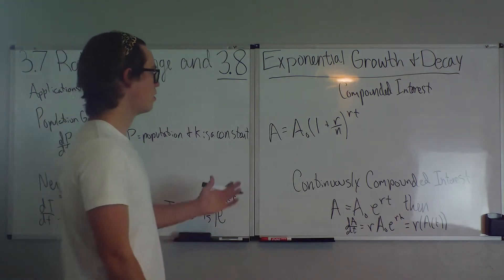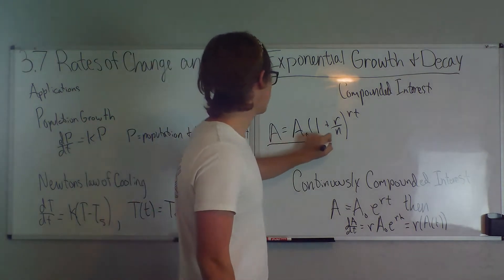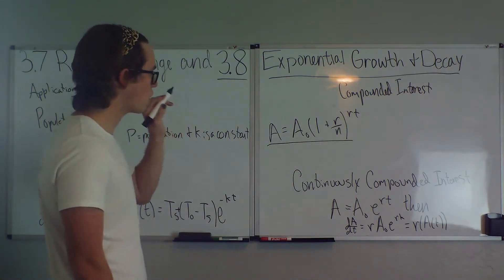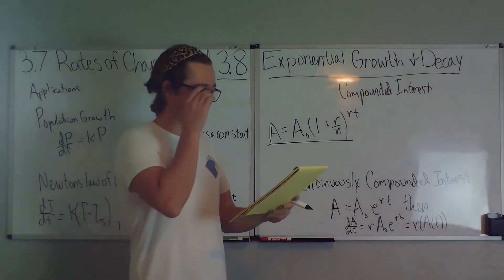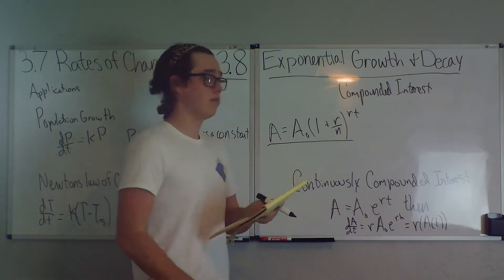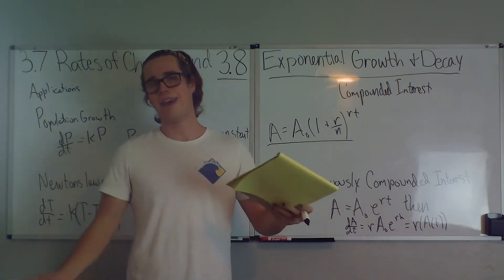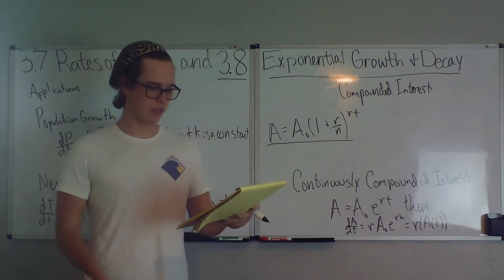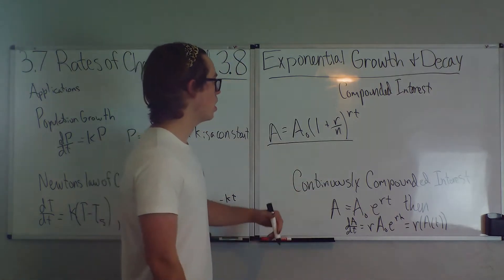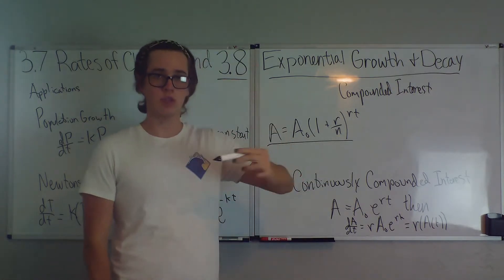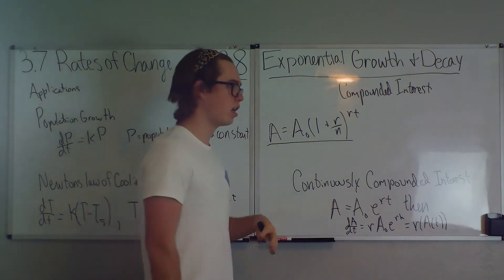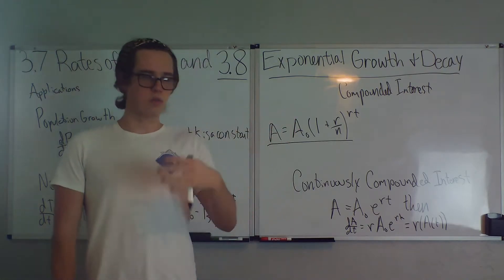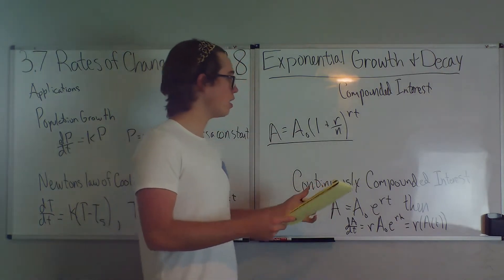And then we go into compound interest. And we get a is equal to a naught times 1 plus r over n to the nt power. And this is where r is our rate of increase or decrease, but usually you don't get negative interest. That would be, I would never put my money in a bank that gives me negative interest. And n is the number of times per year that it's charged or increased. So it could be annually once a year, it could be biannually twice a year, whatever it may be, weekly. And then T is the number of years.